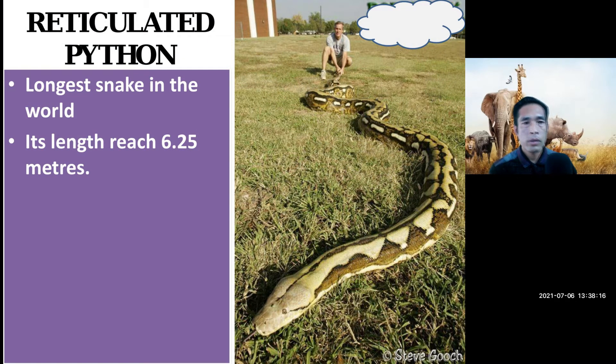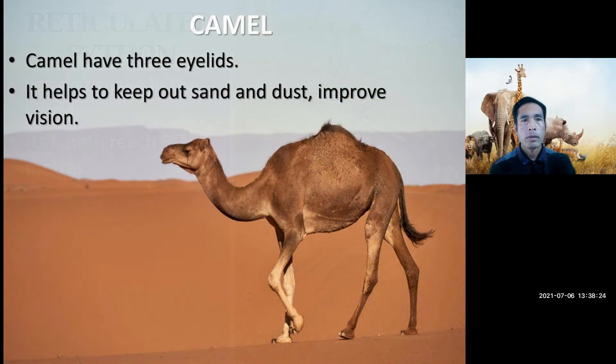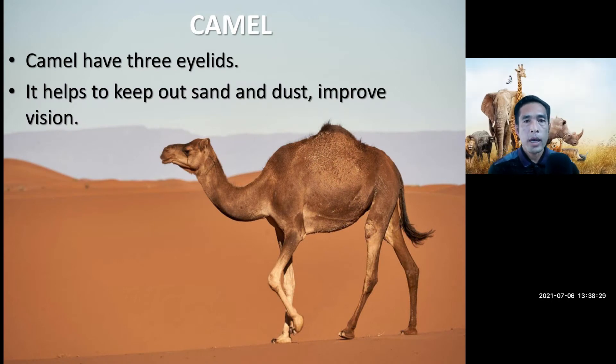The python — this is the reticulated python. It is the longest snake in the world. Its length can reach up to 6.25 meters.